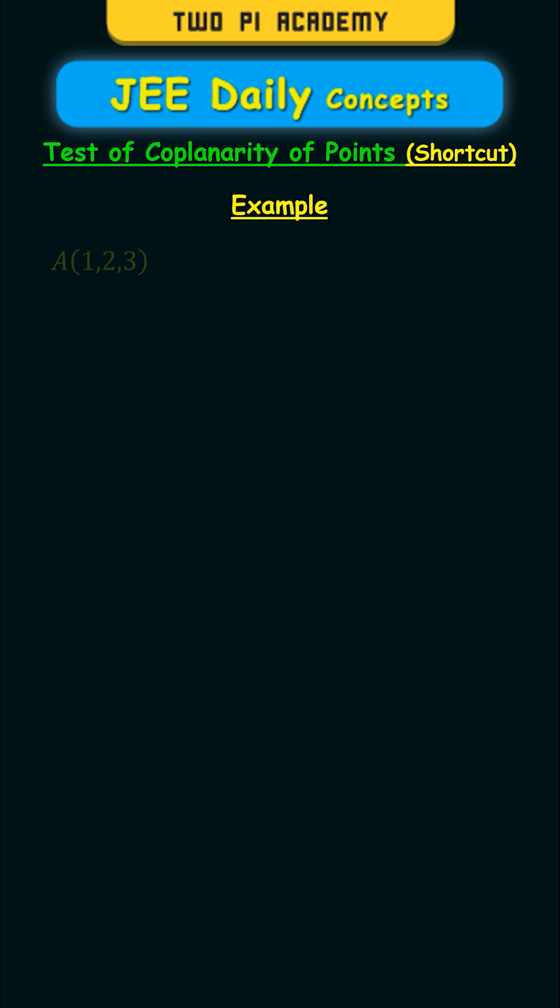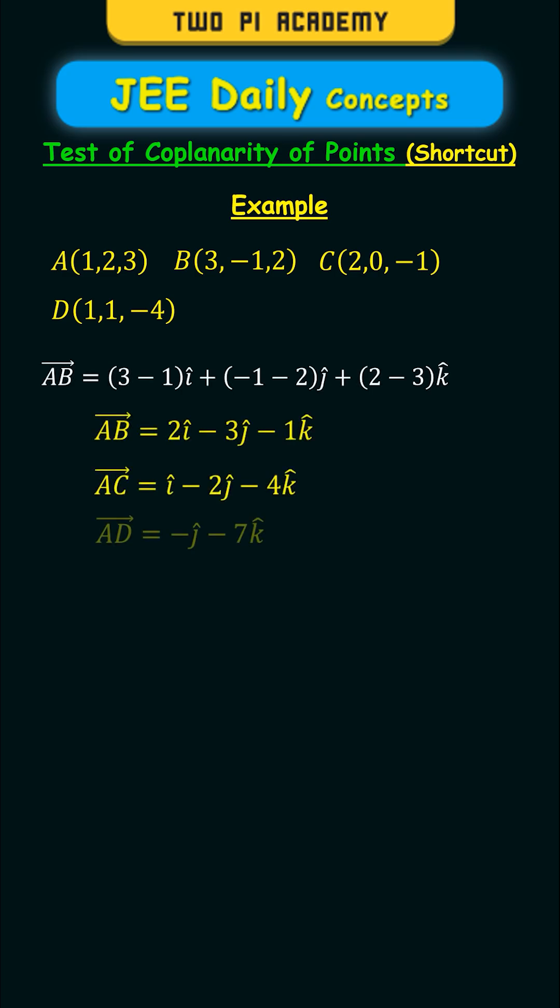So for example, consider the following four points A, B, C, and D. Then first you will calculate vector AB by using the difference of coordinates which gives us the following, and similarly you will calculate vector AC and vector AD.